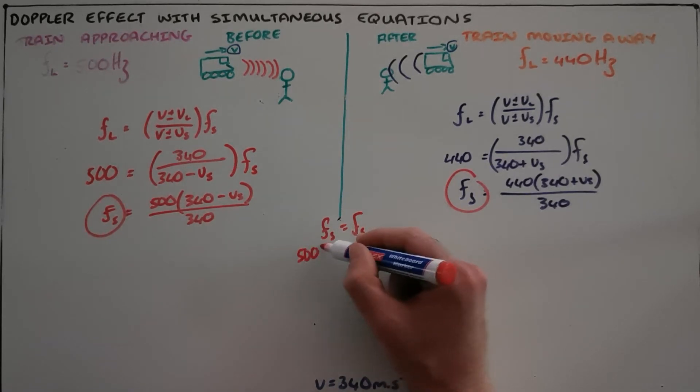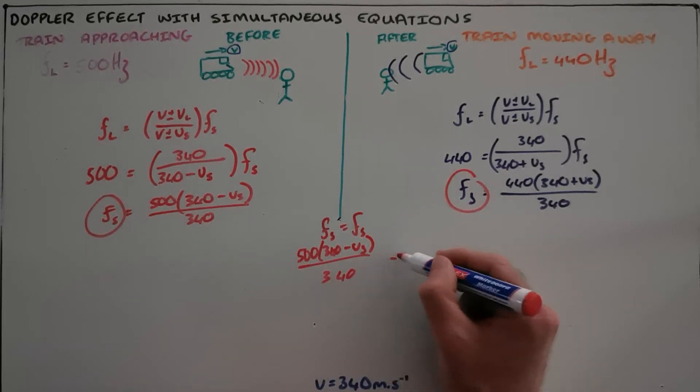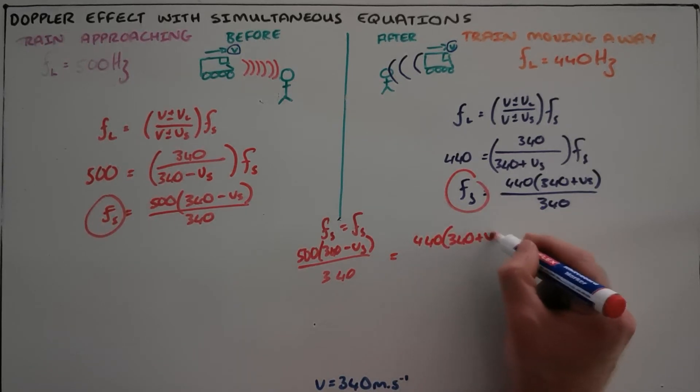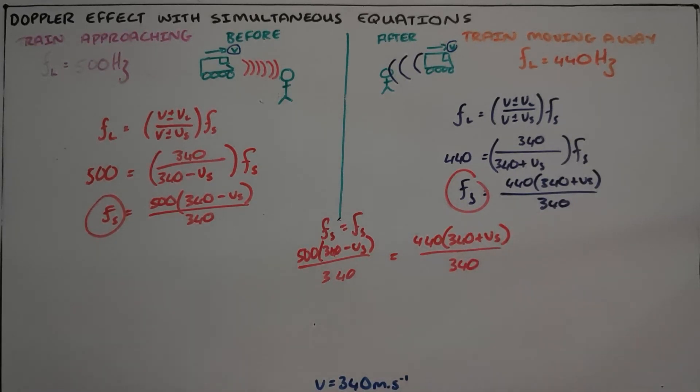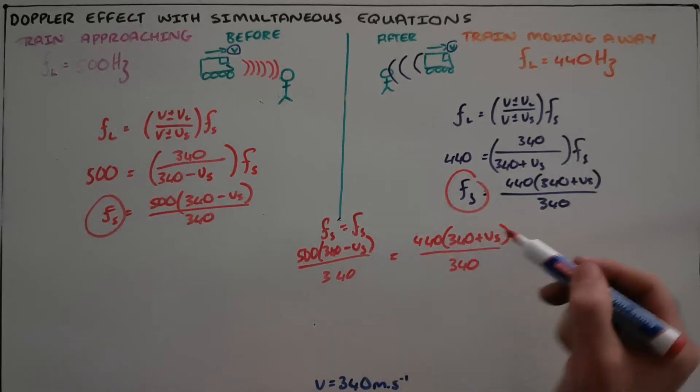That is, 500 times (340 - vs) over 340 must be equal to this calculation over here: 440 times (340 + vs) over 340. This can then be solved because we now have one equation with only one unknown, because vs is a constant.